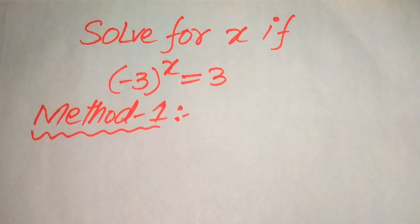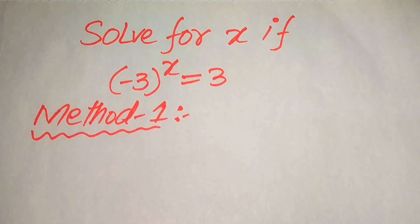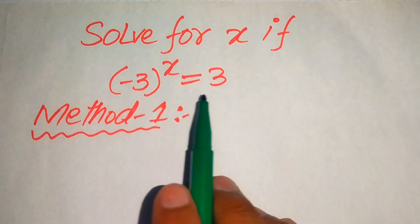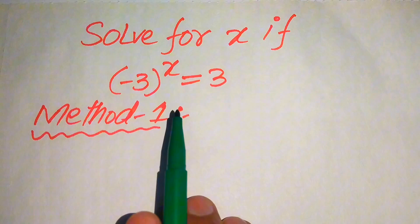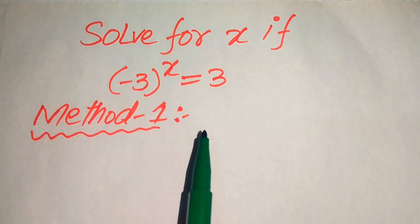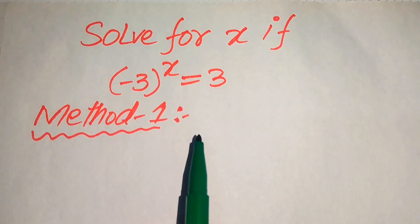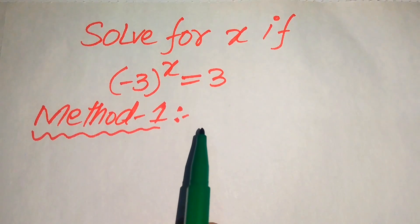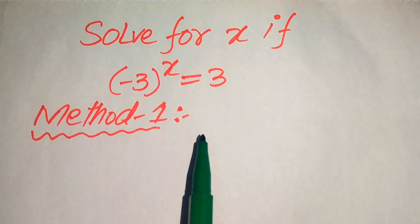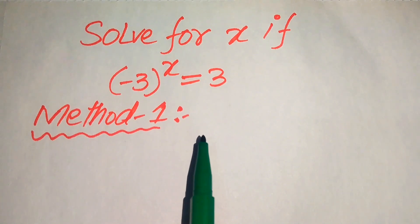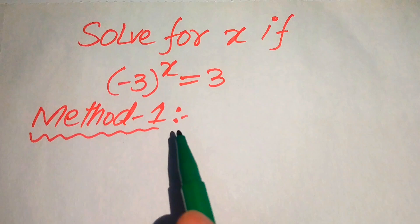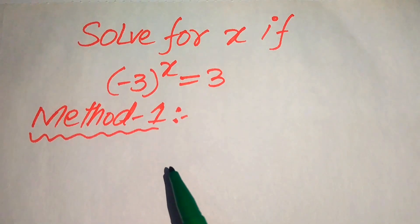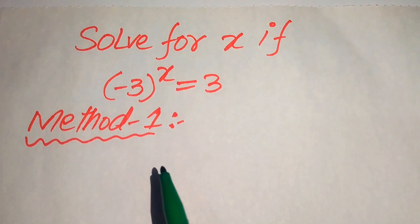Hello everyone, today I want to show you how to solve this problem for the values of x if we have minus 3 to the power of x equals to 3. We solve this problem using two methods, and I hope you like both of them. If you have any other method in mind, please write it in the comment section. In both methods we use the logarithm — in the first method we use the common logarithm, and in the second method we use the natural logarithm.